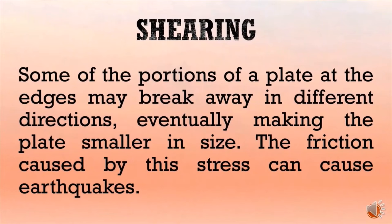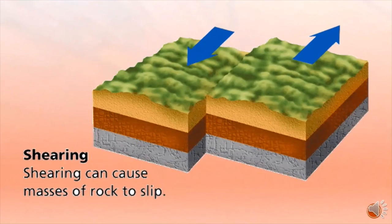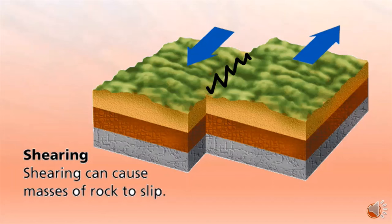Next is shearing stress, where portions of a plate at the edges may break away in different directions, eventually making the plate smaller in size. The friction caused by this stress can cause earthquakes. Shear stress usually happens at different rates at the boundaries of the plate. As shown in the diagram, rocks move in opposite directions and slip past one another, and the resulting friction can cause earthquakes.